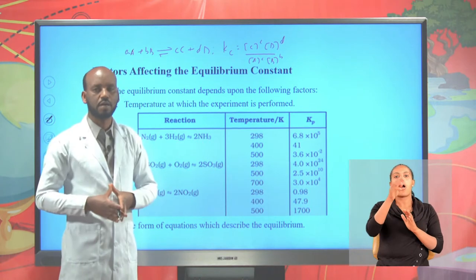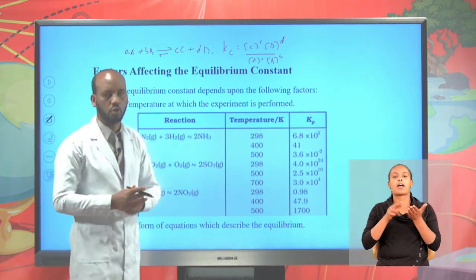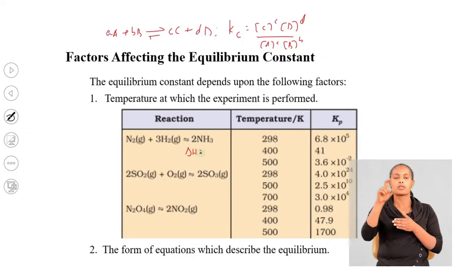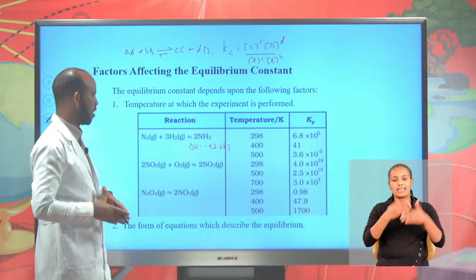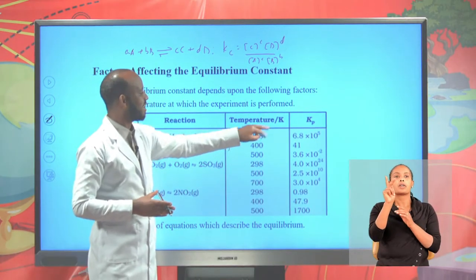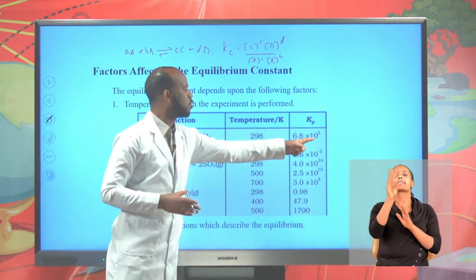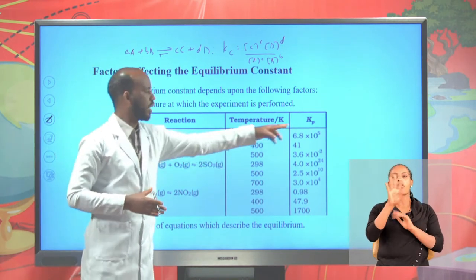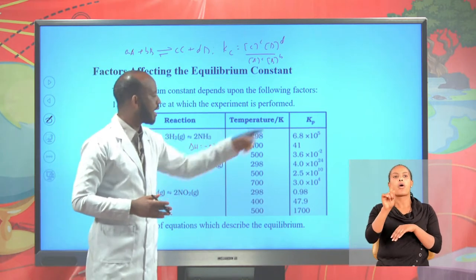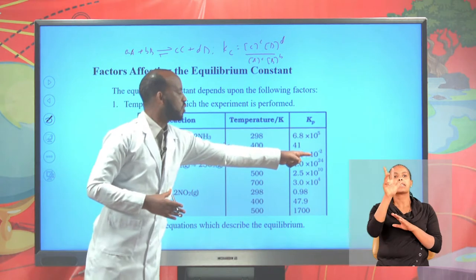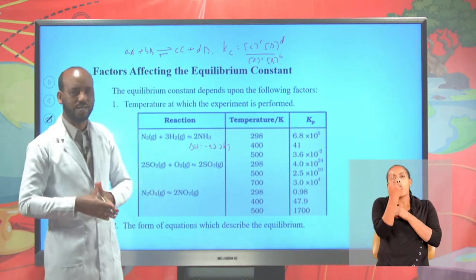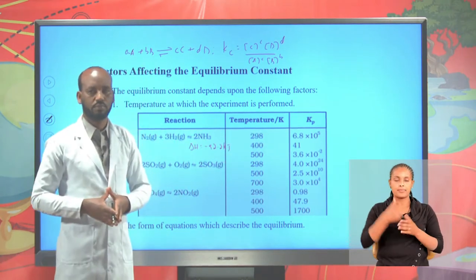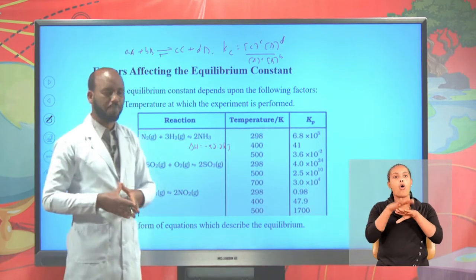Production of ammonia by the Haber process. This reaction is exothermic; delta H is minus 92.2 kilojoules. At 298 Kelvin, K is 6.8 times 10 to the power of 5. At 400 K, Kp is 41. At 500 Kelvin, Kp is 3.6 times 10 to the power of minus 2. Therefore, a reaction at equilibrium has only one equilibrium constant at a given temperature. Equilibrium constant KC depends on temperature.